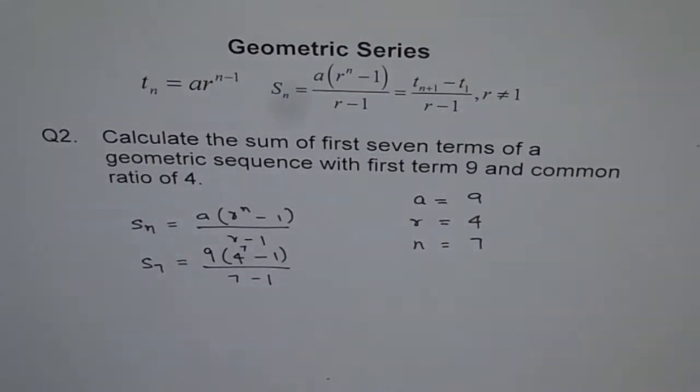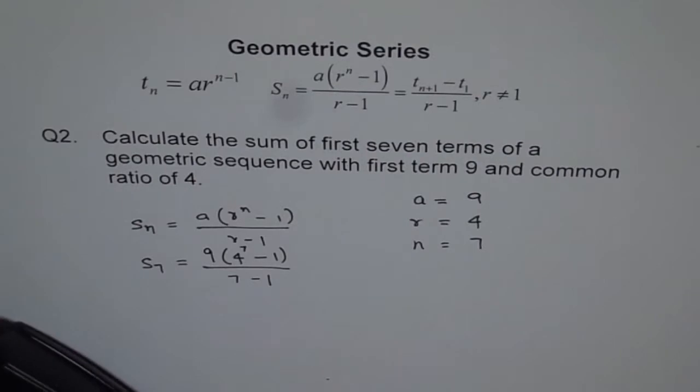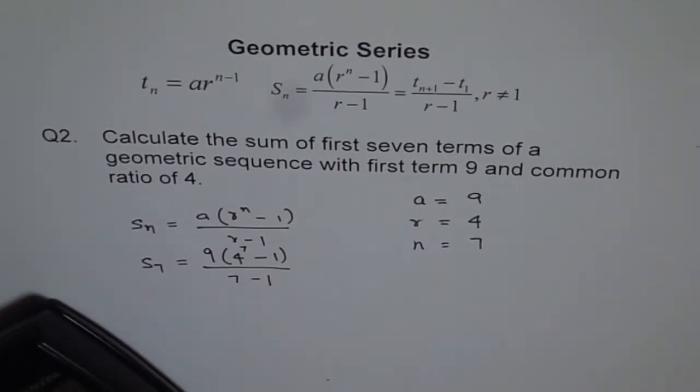We can use our calculator to calculate this value, starting from the bracket itself. 4 to the power of 7, then take away 1 from it, times 9, and divided by 7 minus 1, which is 6. Divide by 6.